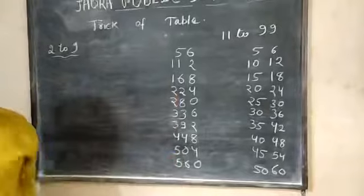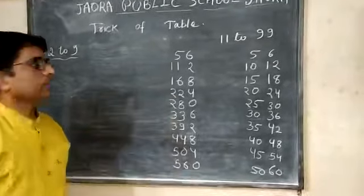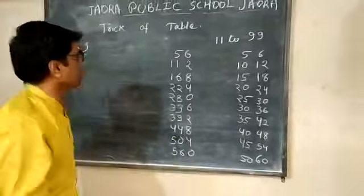And now 50 plus 6, you will get 56. So in this way the table of 56, within a minute you can write it. And if you practice, you can do it in seconds also.